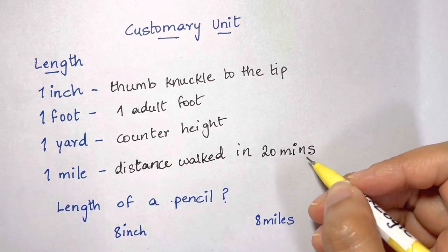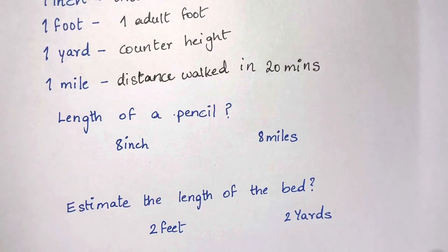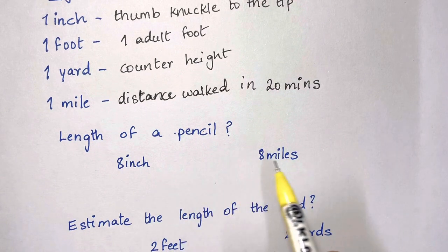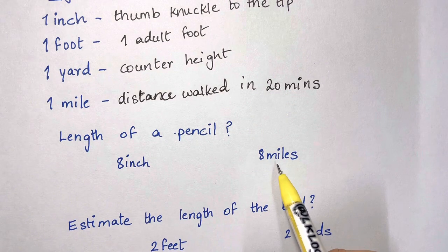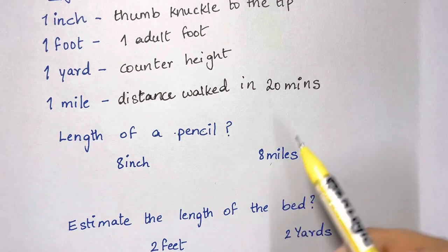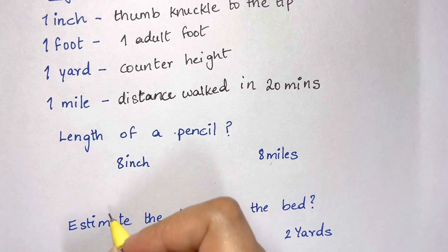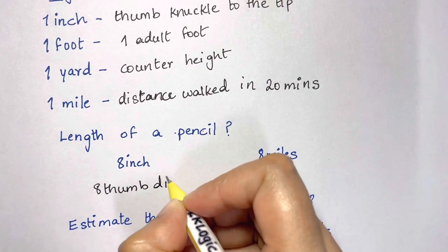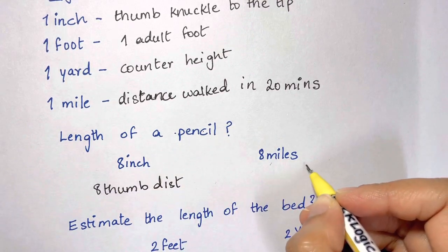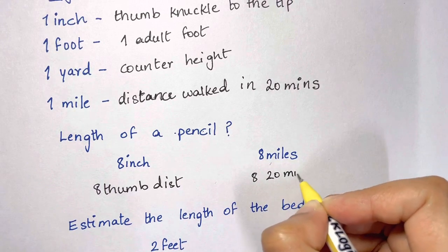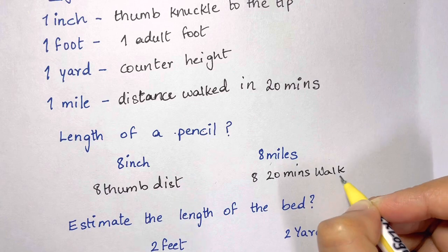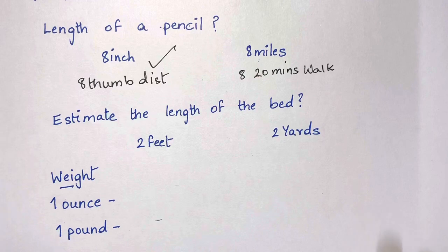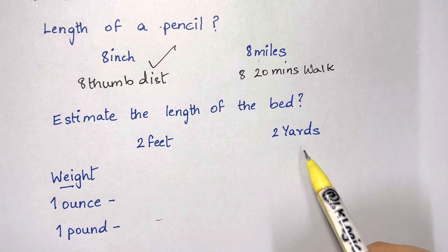Let's estimate what is the best unit for the length of a pencil — is it eight inches or eight miles? Eight inches is like eight thumb distances, and eight miles is eight 20-minute walks. So the nearest estimate is eight inches.